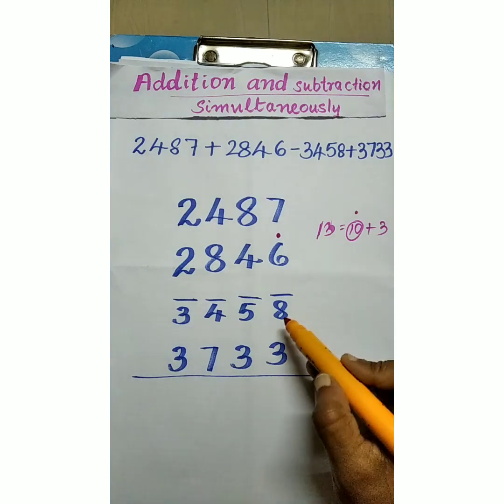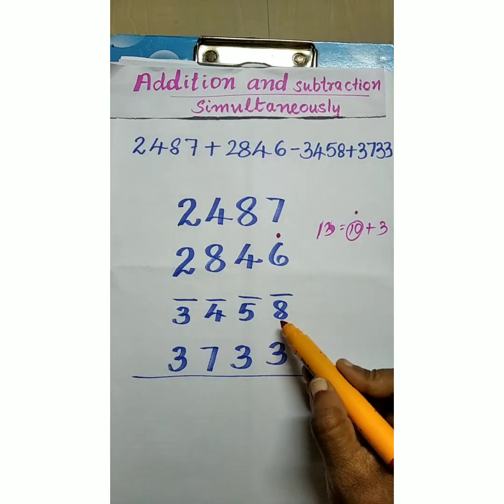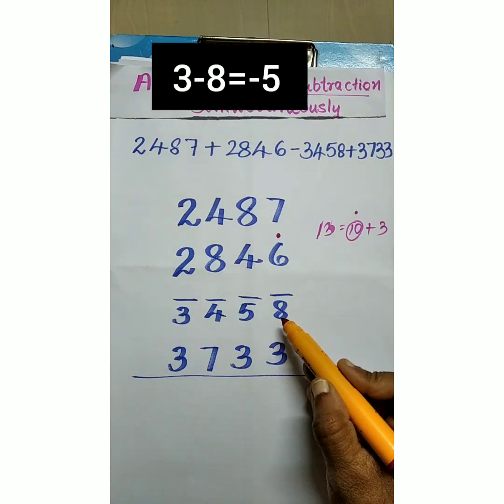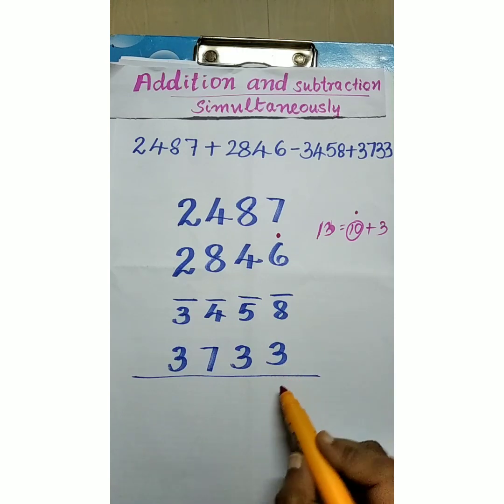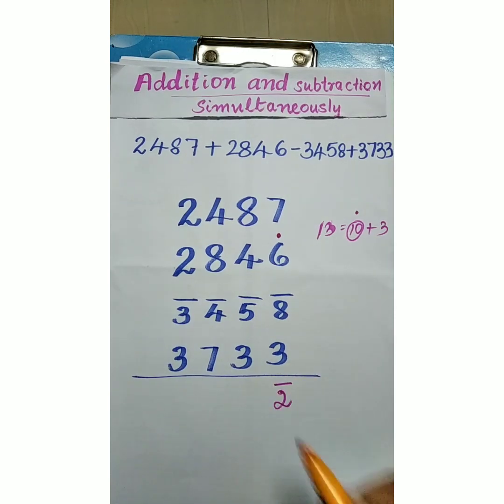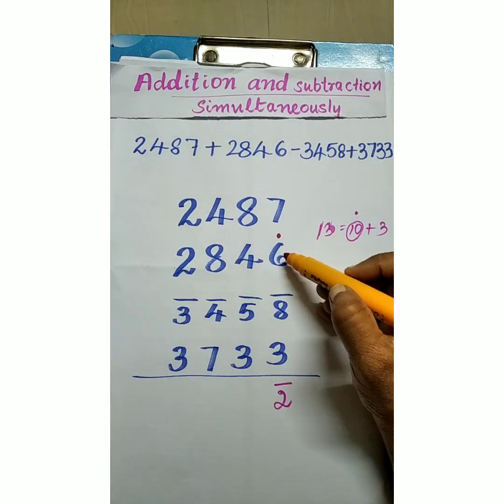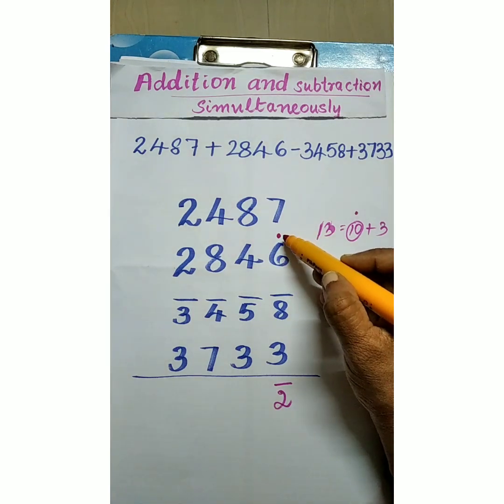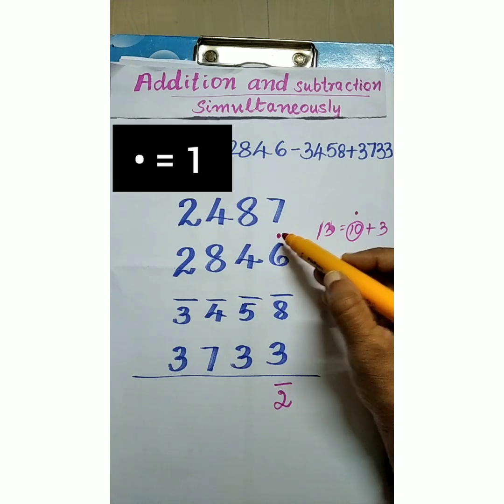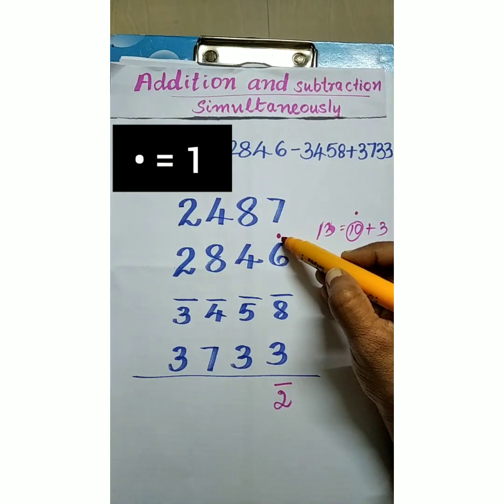3 plus next number that is 3 minus 8. 3 minus 8 is minus 5. Minus 5 plus 3 is minus 2. Now here this shoot is on positive digit. So this is positive shoot. That is we can take it as 1. So 8 plus 1 is 9.